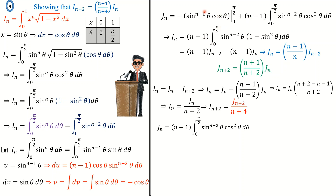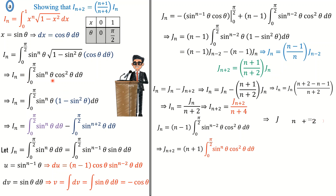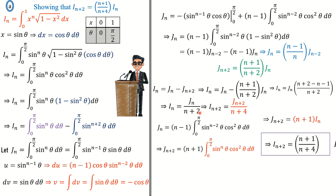Looking at the boundary term, it gives zero, so J(n) is simply the integral of sine to the n of θ times cosine squared θ. We can find J(n+2) by replacing n with n+2. The quantity in red is simply our I(n). This means J(n+2) equals (n+1) times I(n). Substituting into the expression for I(n+2), our proof is complete: I(n+2) is equal to (n+1)/(n+4) times I(n).